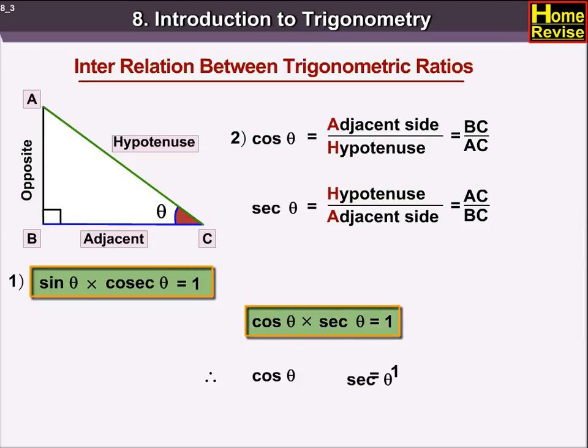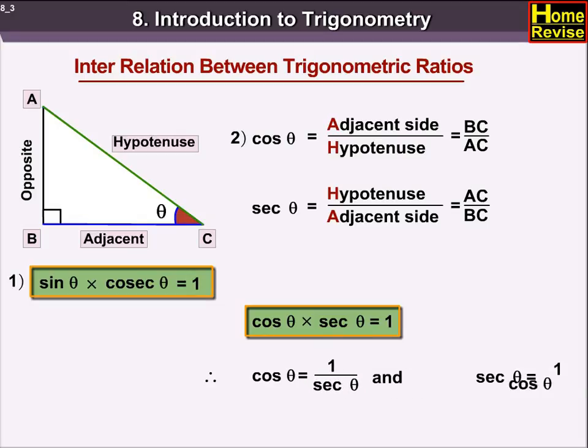We can also write cos theta is equal to 1 upon sec theta, and sec theta is equal to 1 upon cos theta.